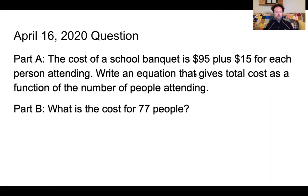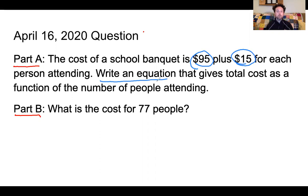I'm going to look at my question. I wrote it out and gave you two parts. The first: the cost of a school banquet is $95 plus $15 for each person attending. Write an equation that gives the total cost as a function of the number of people attending. I'm using the numbers 95 and 15, and remember, this first part is just asking me to write an equation — I'm not solving, just following what it's asking.